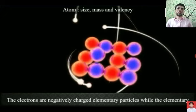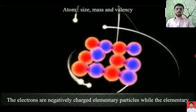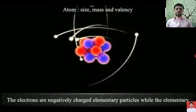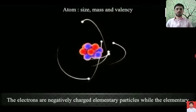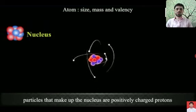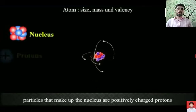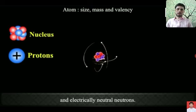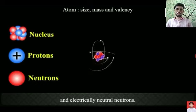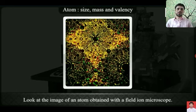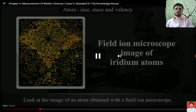As you can see on the screen, electrons are revolving around the nucleus which contains protons and neutrons. Protons are denoted by blue colored structures and neutrons are expressed by red colored structures.